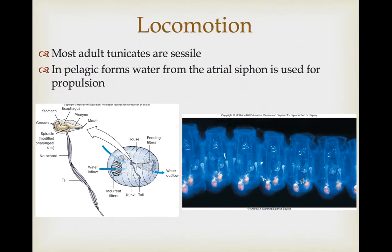Most tunicates are sessile, but there are some pelagic forms. In these cases, water from the atrial siphon is used for some jet propulsion.